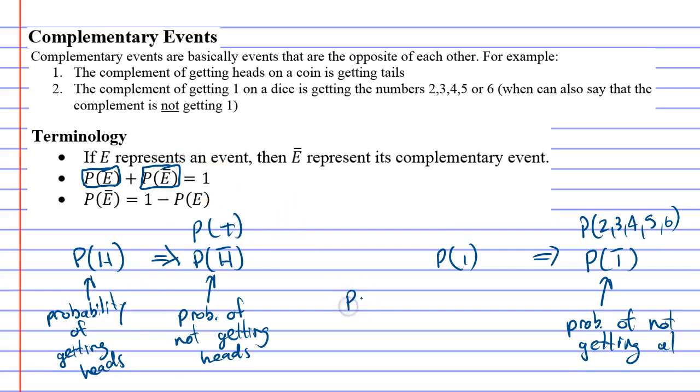For example, if we look at the probability of getting one, that's one over six. And the probability of not getting one, which we mentioned with the numbers two, three, four, five, and six, that's got a probability of five over six. And when you add those two fractions up, it's six over six, or one.